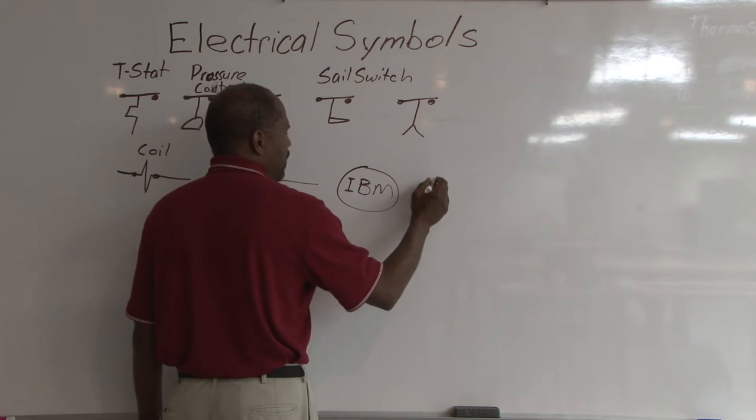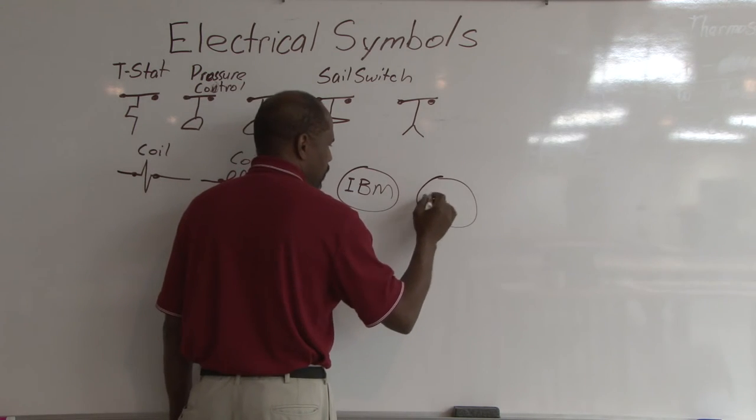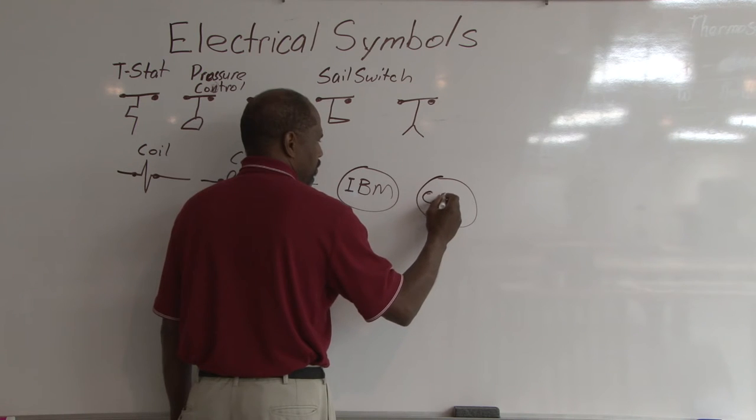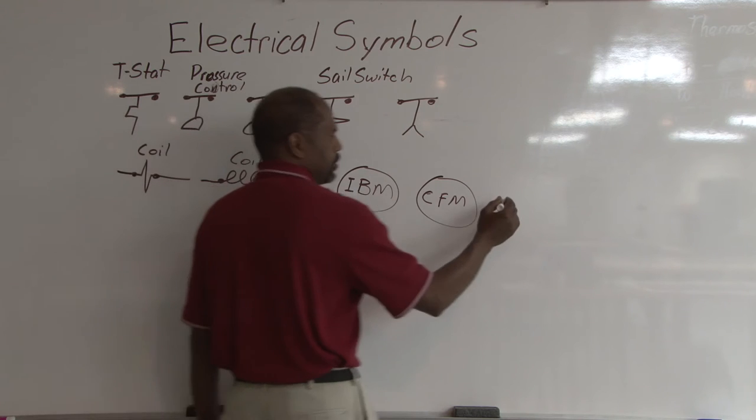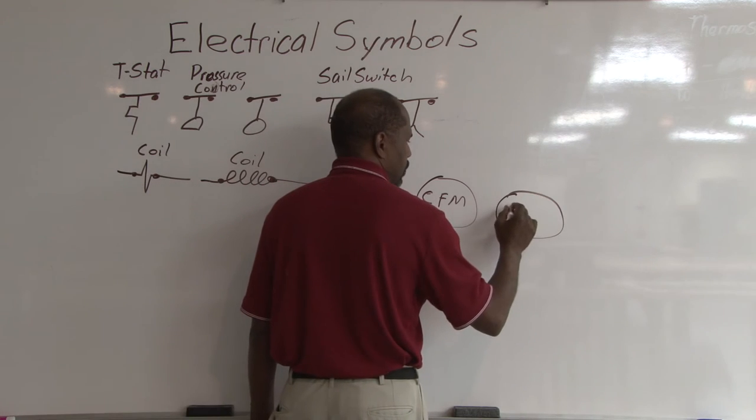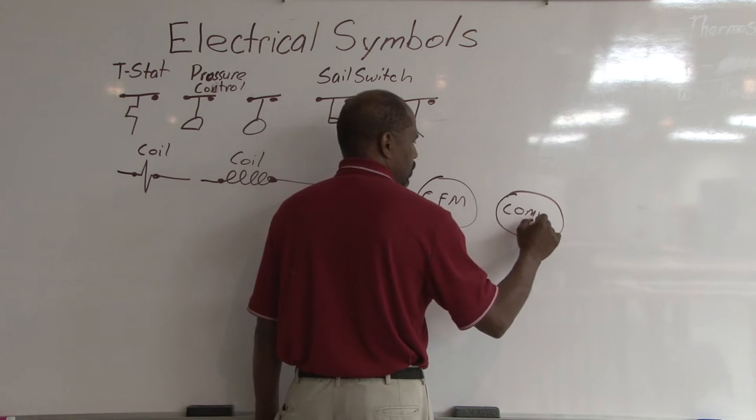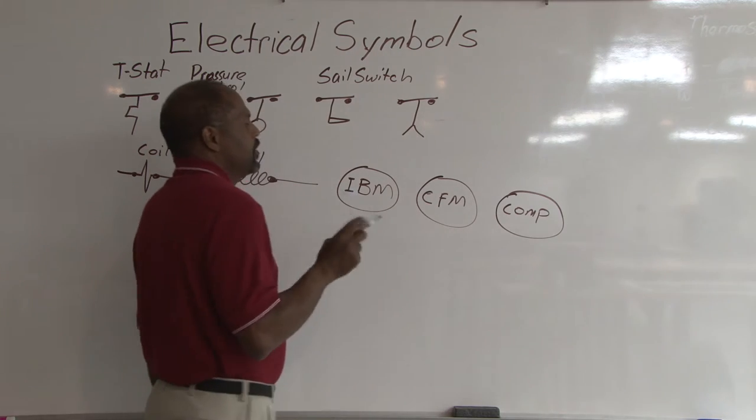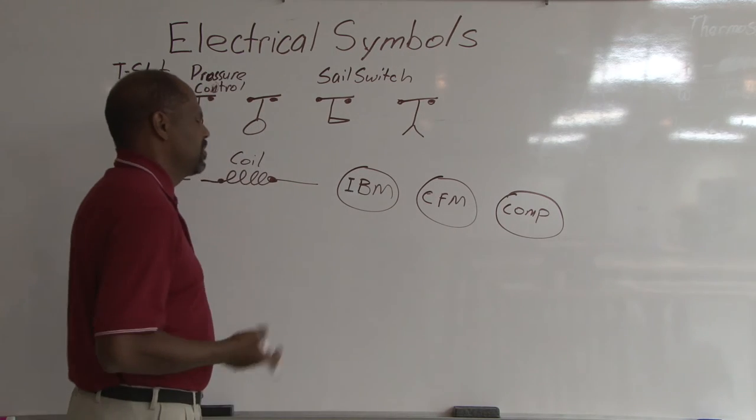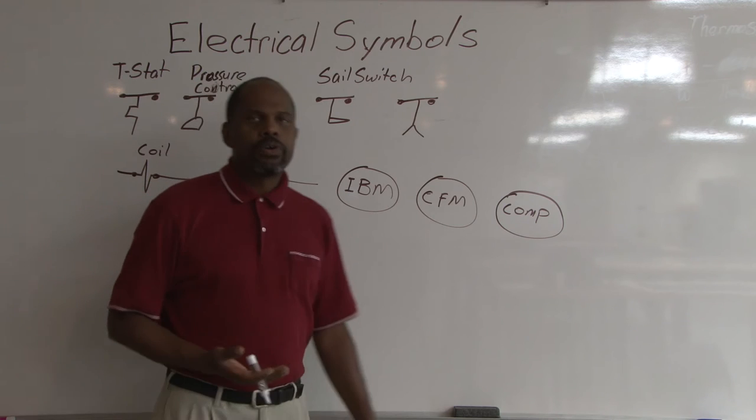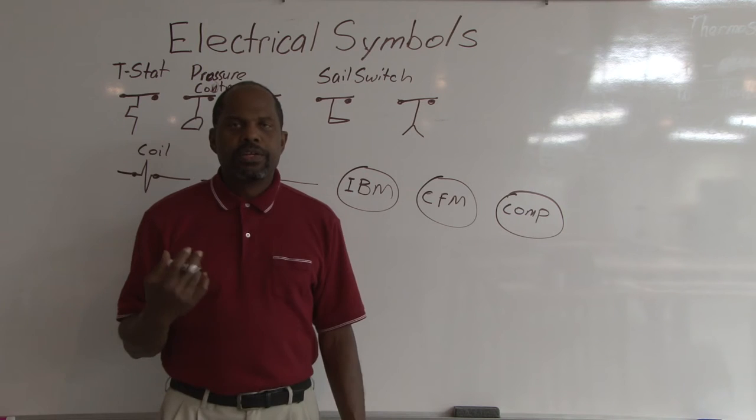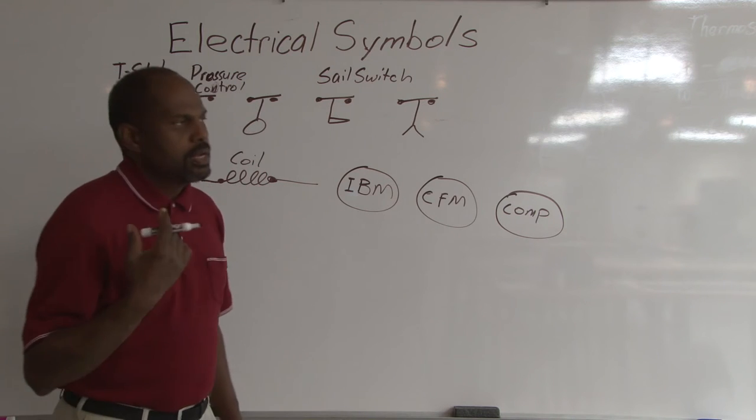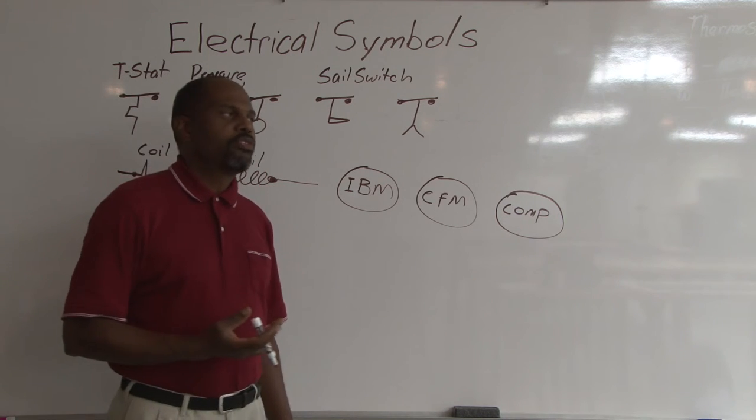If it's a condenser fan motor, it could be a circle, condenser fan motor. If it's a compressor, COMP for compressor. So no matter what, it's just a circle with the information written in or abbreviated to give the technician the understanding of what the part is used for.